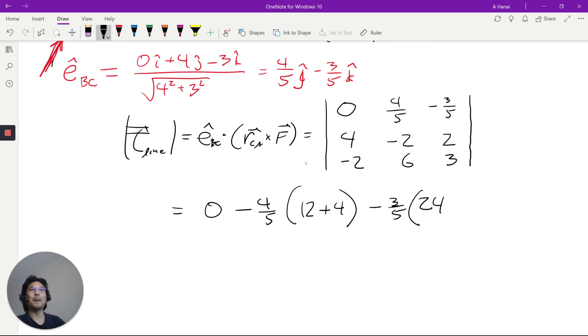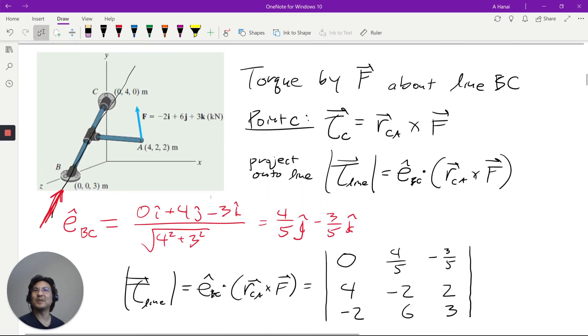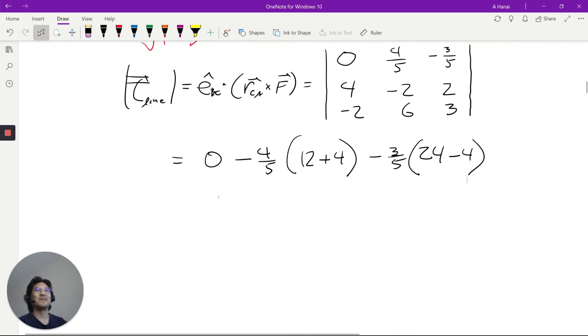Okay, and then, plus this times this. So, 24 minus 4. There you go. And, oh, let me check the units. This is kilonewton meters. Kilonewton meters. Okay.